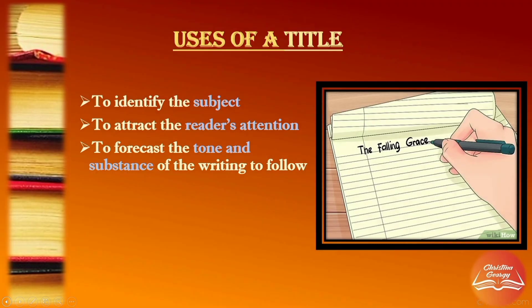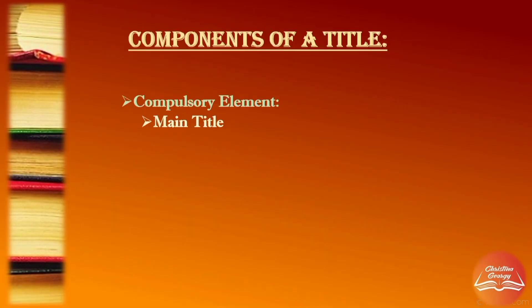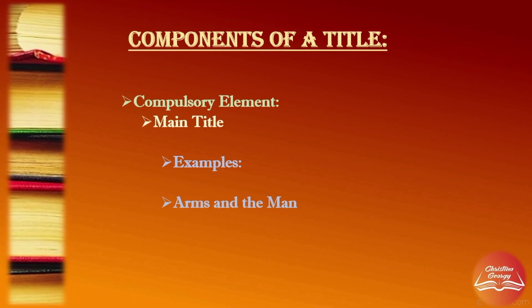Now I'll speak about the various components of a title. There is one compulsory element which is none other than the main title. Every work has a main title which would be the key identification of that particular work. The very first example is Arms and the Man — a very familiar title to most literature students, as it is the title of a well-renowned play written by the Irish playwright George Bernard Shaw, prescribed for detailed study across universities in India for both MA and BA level learners.